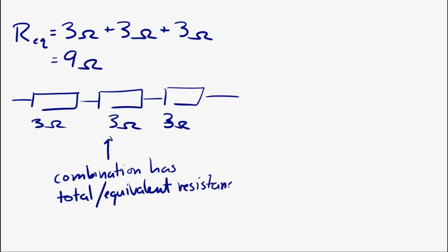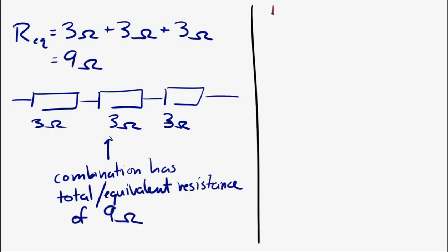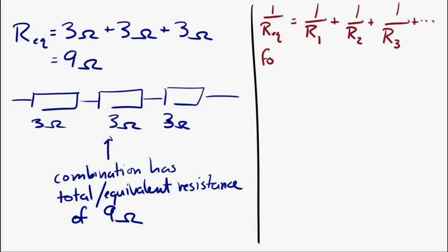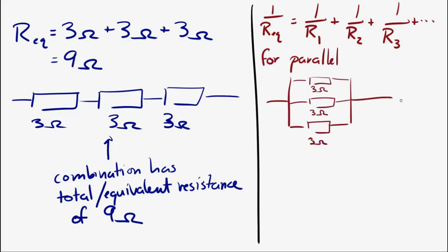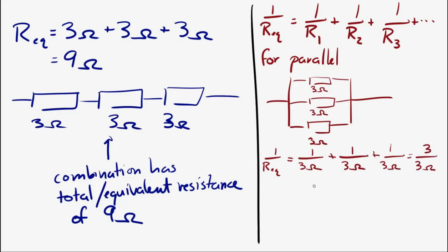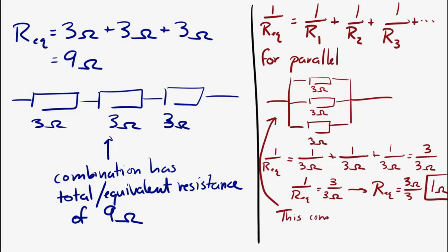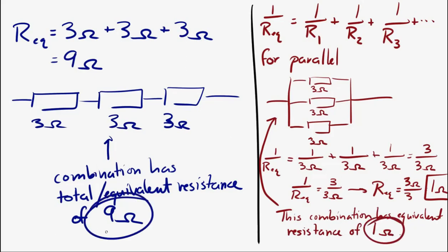For a parallel combination, it's a little more complicated. If we had three 3-ohm resistors connected in parallel, then 1/R_eq = 1/3 ohms + 1/3 ohms + 1/3 ohms, so 1/R_eq = 3/3 ohms = 1/1 ohm, meaning the equivalent resistance is 1 ohm. Notice that in a parallel combination, the equivalent resistance is always smaller than any of the individual resistances. Whereas in series, the total resistance is always greater than any of the individual resistances.